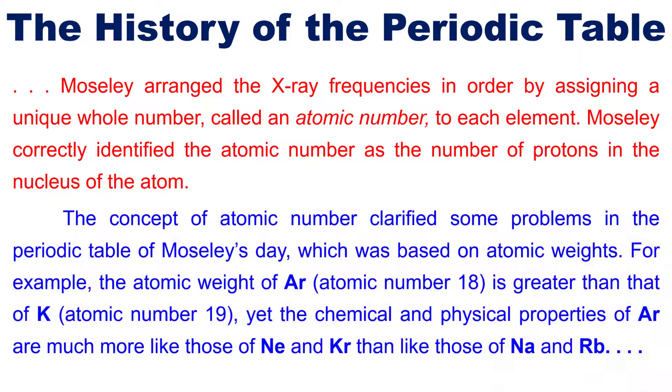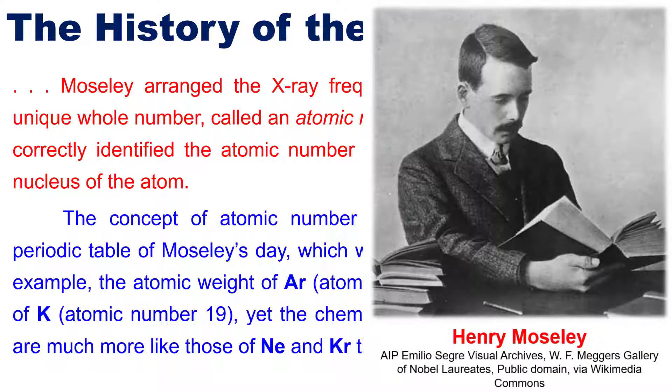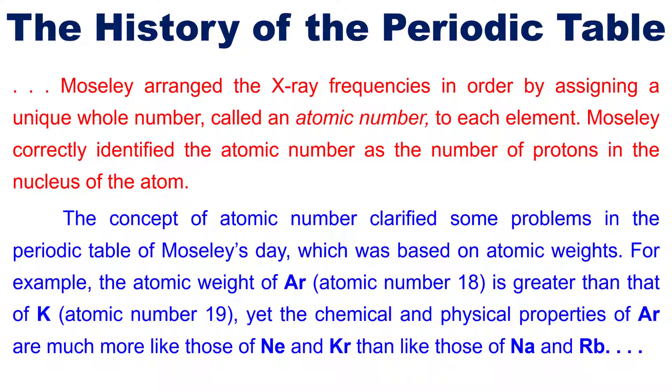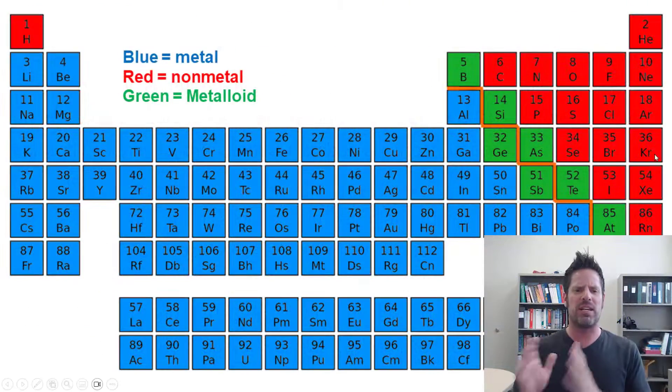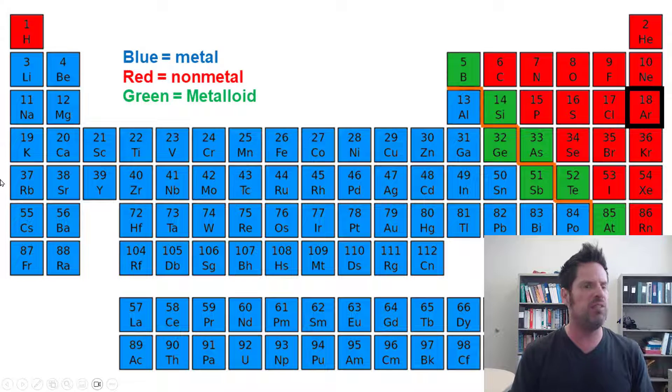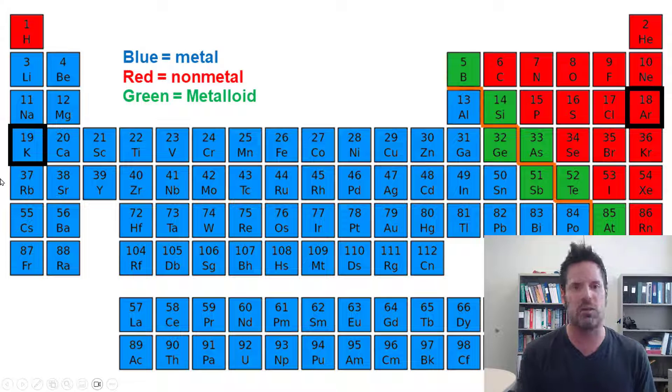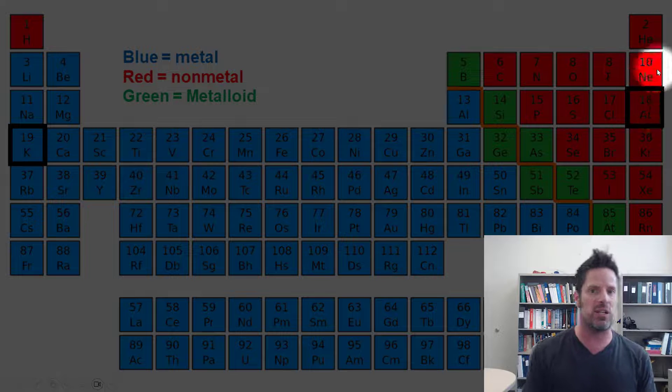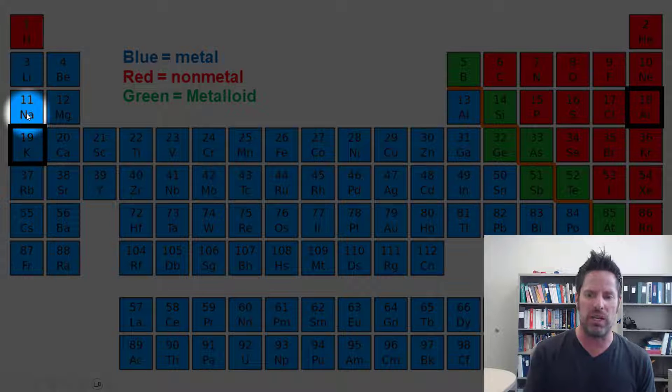The concept of atomic number clarified some problems in the periodic table, which was based on atomic weights. For example, the atomic weight of argon is greater than that of potassium, yet the chemical and physical properties of argon are much more like neon and krypton than like those of sodium and rubidium.